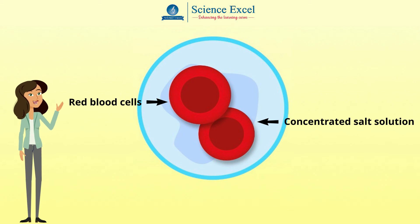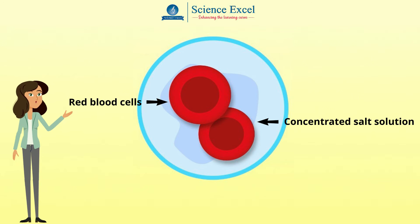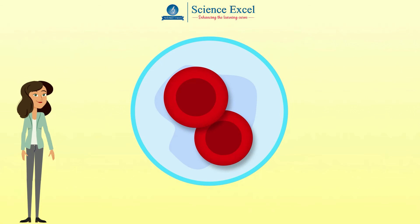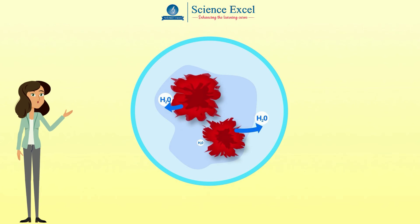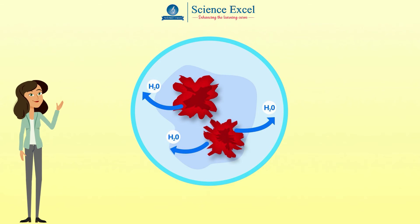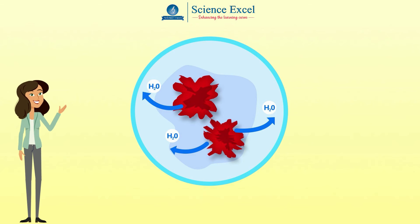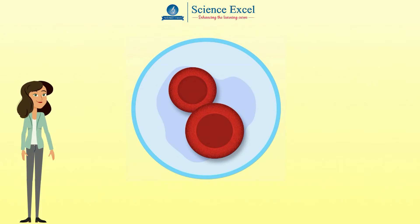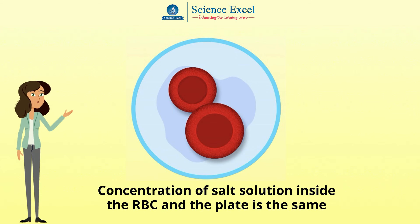Let us take a plate containing some red blood cells in a concentrated salt solution. The water content in this concentrated salt solution is less compared to the water content inside the cells. So water molecules move from inside the cells to the outside, as the concentration of water is higher within the cells. We observe that the cells start to shrink or shrivel. This kind of solution is called a hypertonic solution.